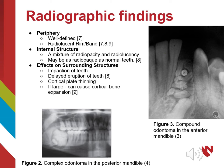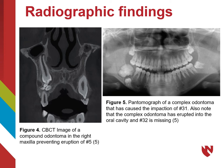Odontomas can have several negative effects for the patient, including impaction of teeth, delayed eruption of teeth, cortical plate thinning, and rarely cortical bone expansion if large enough. On the left, a cone beam CT image of a compound odontoma viewed in the coronal cross section shows it preventing the eruption of tooth number five. On the right, a pantomograph of a complex odontoma shows it causing impaction of tooth number 31.